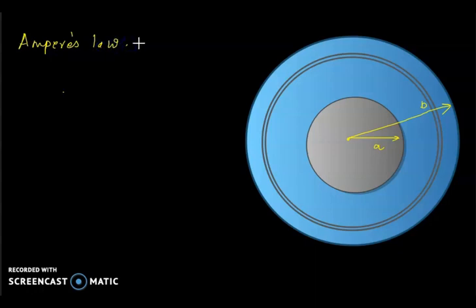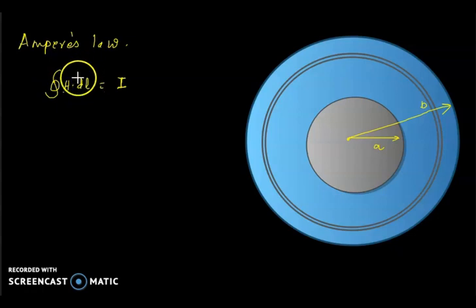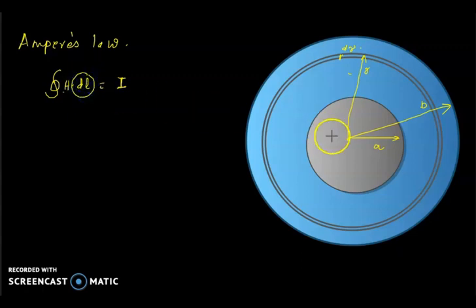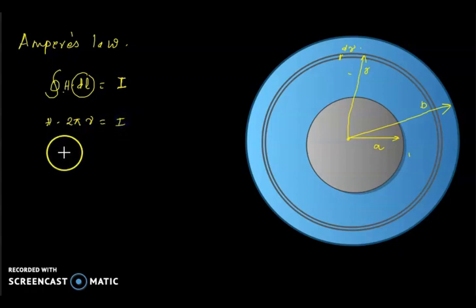Ampere's law states that the line integral of H·dL around any closed loop equals the enclosed current. So the magnetic field intensity around the closed loop is equal to the enclosed current. We select an arbitrary point at radius r with thickness dr. The integration of dL along the circular path is 2πr. So this gives H·2πr = I, and the expression for H becomes H = I / (2πr). Let us call this equation 1.